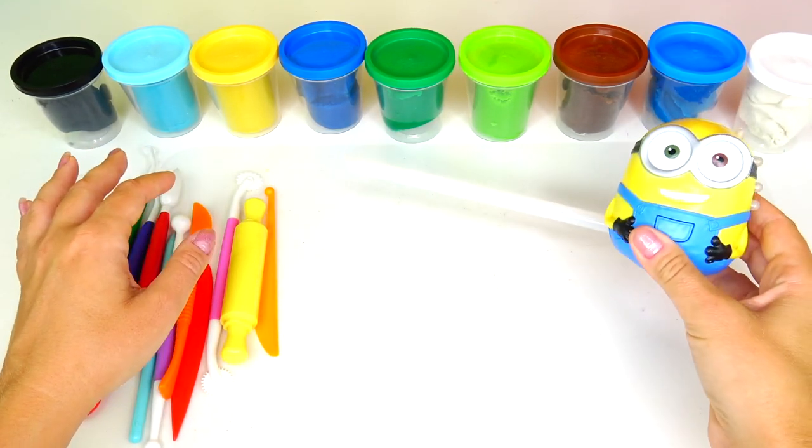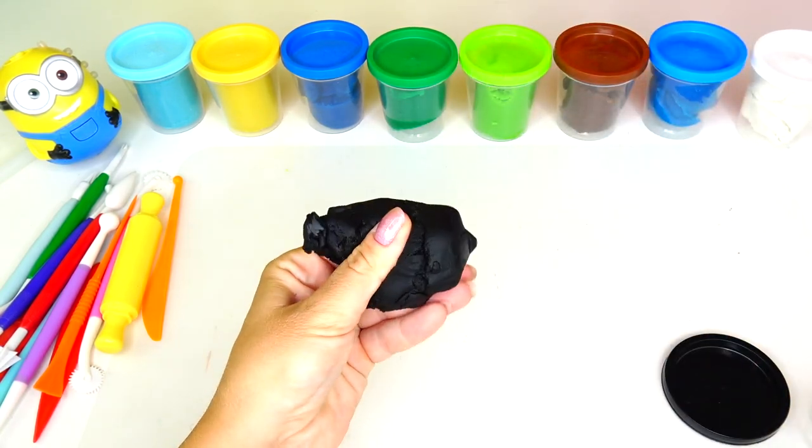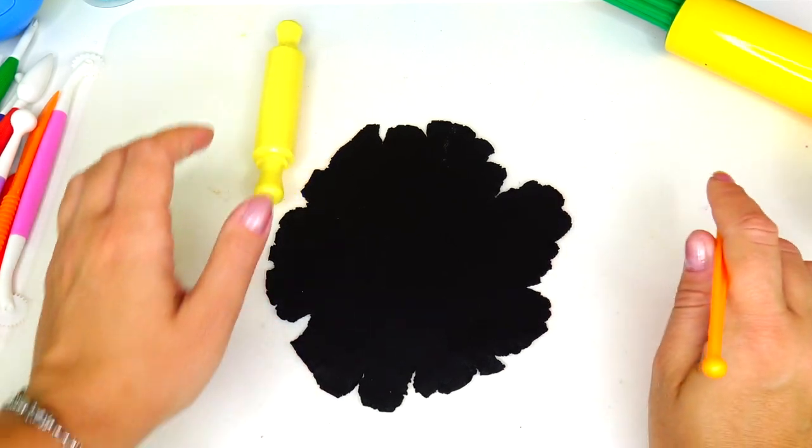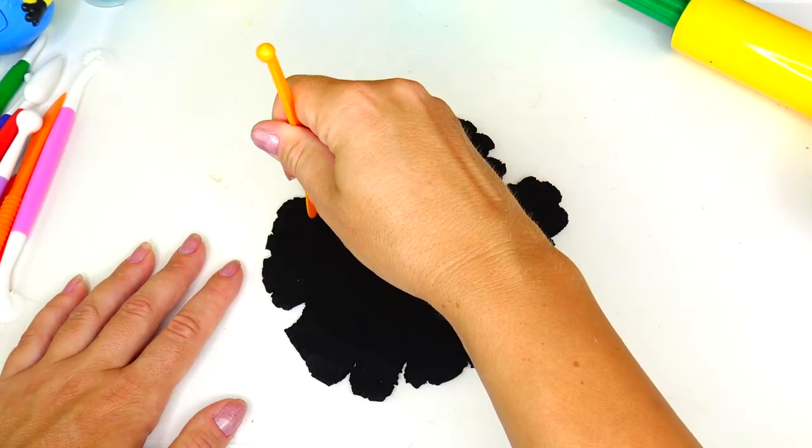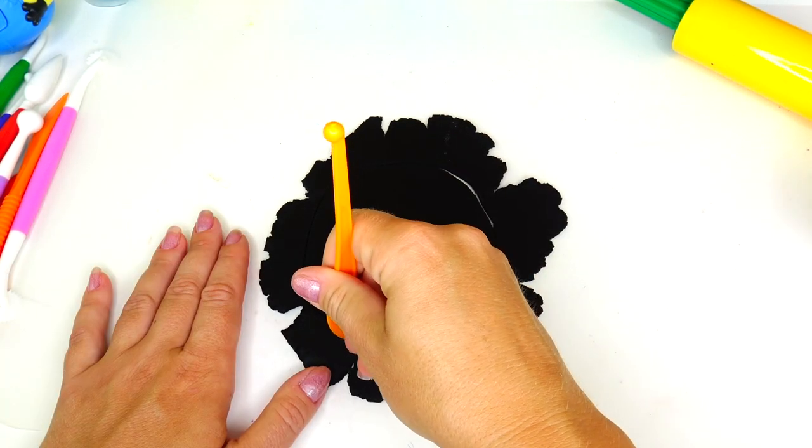Step one, let's roll out black colorful dough for the base. This dough looks like a flower. Next, let's cut out the shape of Bob's body. We cannot forget about his little shoes.